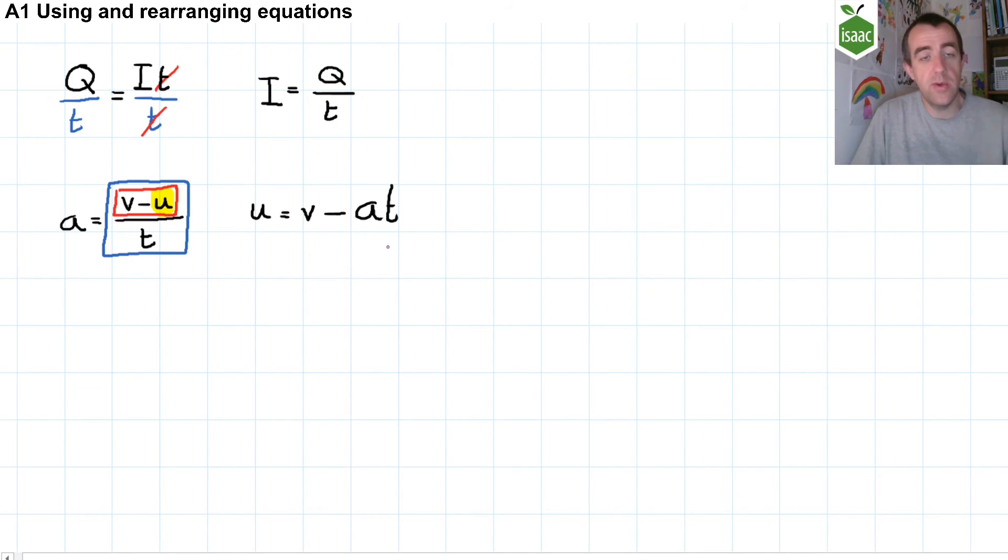Now at this point, you would substitute numbers. So you would look in the question to see what V, A, and T are, substitute them, and you would write what those numbers are. Maybe it's 10 meters per second minus 9.81 meters per second per second multiplied by three seconds or something like that. You would then plug that into your calculator to get your answer of what U is.